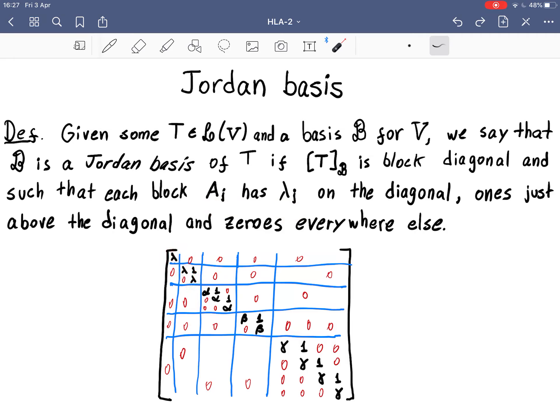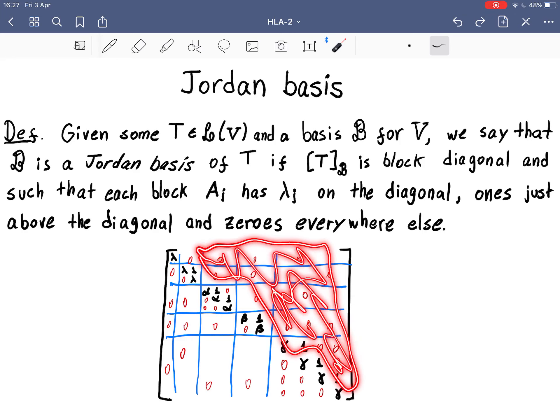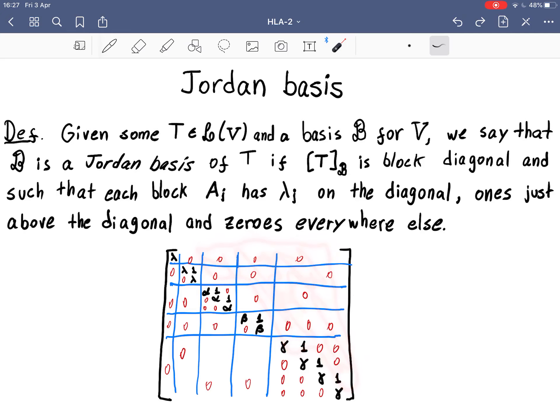The ones just above the diagonal, and zeros everywhere else. So, many more zeros than what we had before. Is that so useful? Maybe, maybe not. But this is the simplest we can get to describe a matrix.